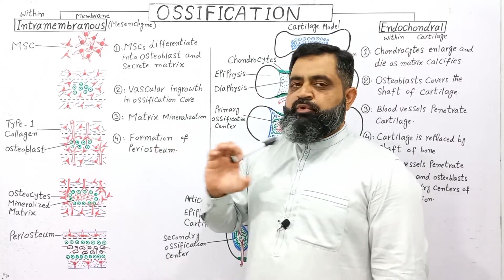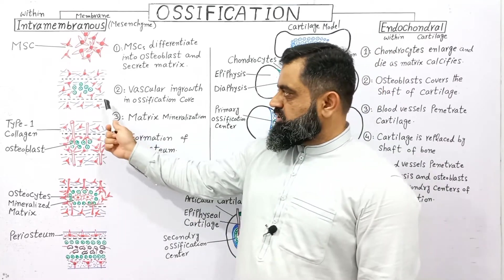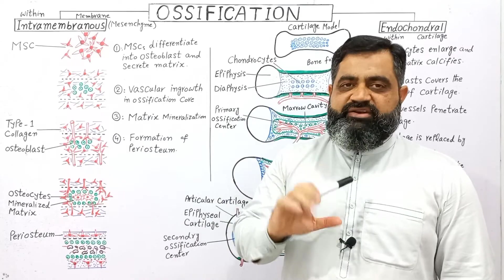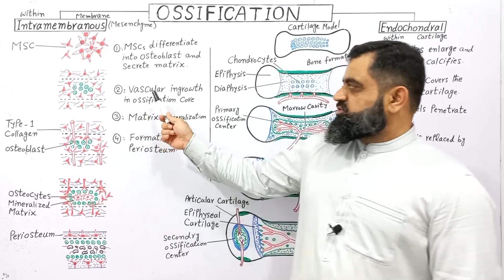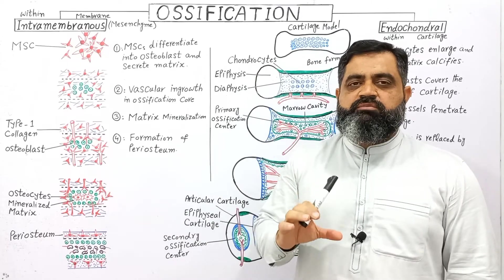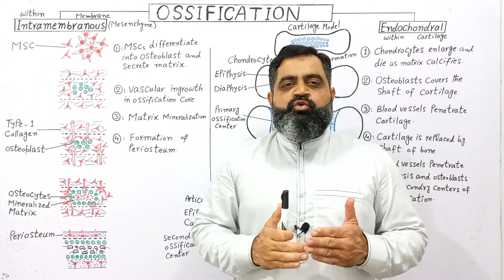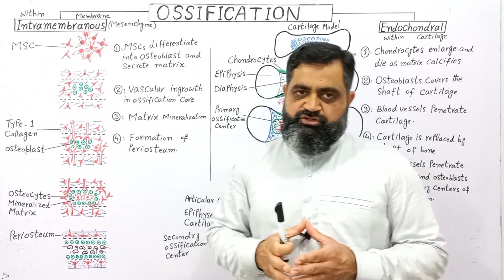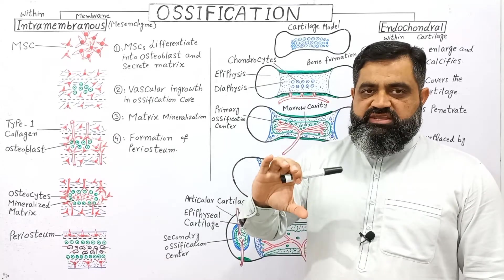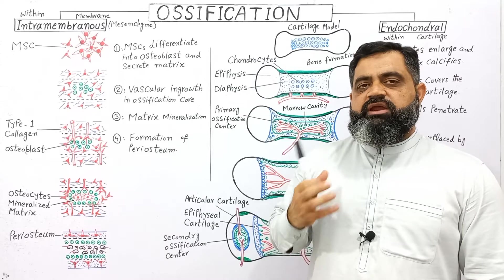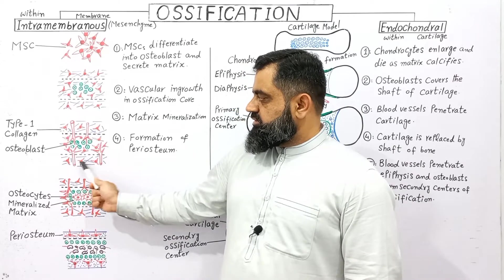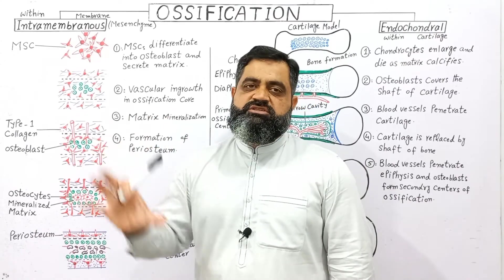The osteoblasts are producing a protein known as collagen, which forms the matrix. The blue area in the diagram shows collagen, which is a type 1 matrix. In the second step, vascular growth occurs in the ossification core. We need a blood supply to provide minerals and calcium to the ossification core. Blood vessels penetrate this area to provide nutrition, calcium, and minerals for bone synthesis. Osteoblasts are present in the center along with blood capillaries, stem cells, and type 1 collagen.